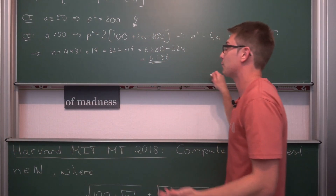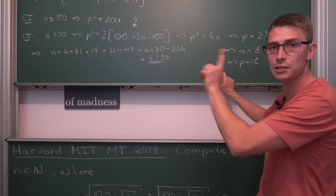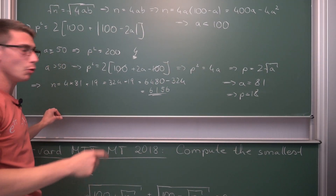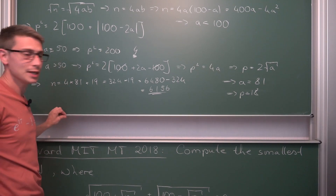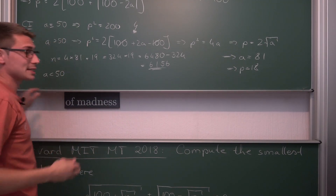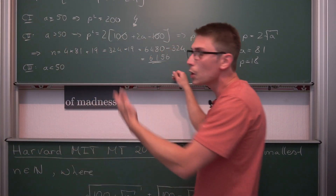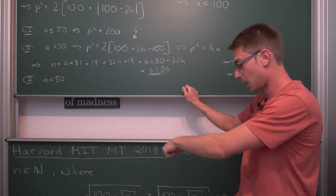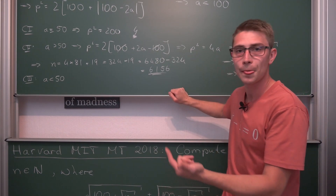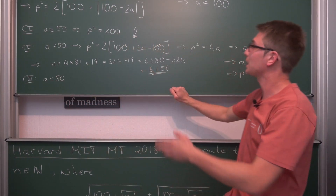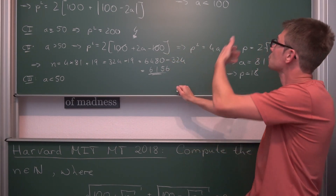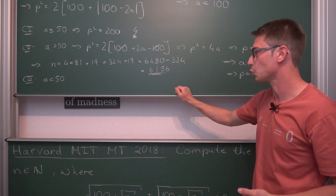That's pretty big! But we're not done yet — we still have the case a < 50 to address. If a < 50 you could find some n satisfying the equation as an integer, but this wouldn't give the smallest n by the aforementioned arguments: n is only smallest when a is largest, due to the degree-2 polynomial relationship.